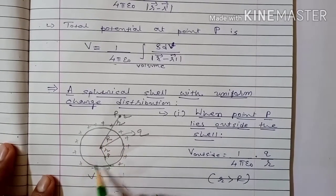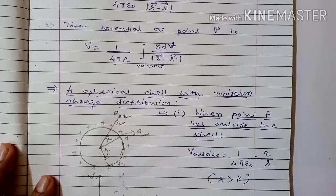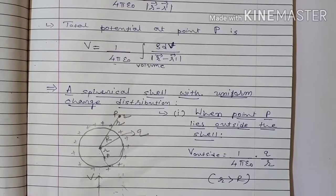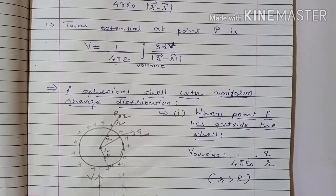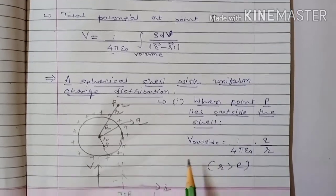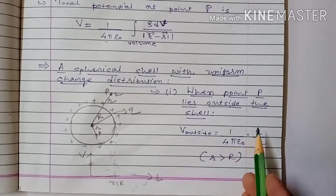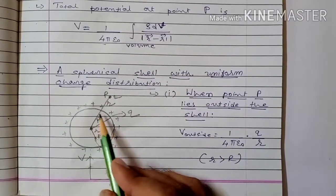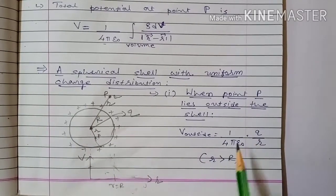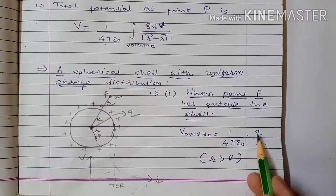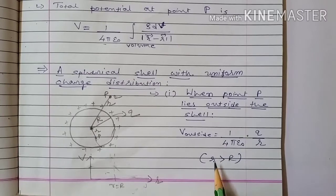The electric field outside the shell acts as if the charge is concentrated at its center — it behaves as a point charge. Using the formula for electrostatic potential due to a point charge, V = 1/(4π ε₀) × q/r, where r is greater than R. So electrostatic potential outside is 1 upon 4π ε₀ into q by r, for r > R.